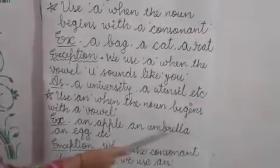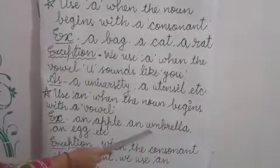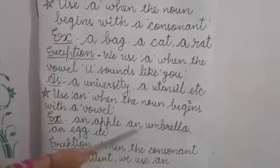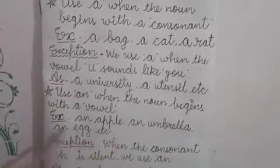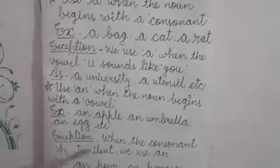An umbrella - here also the same. 'U' is a vowel, that's why we use 'an' here. An egg, etc.